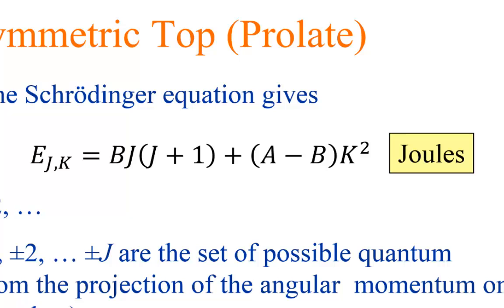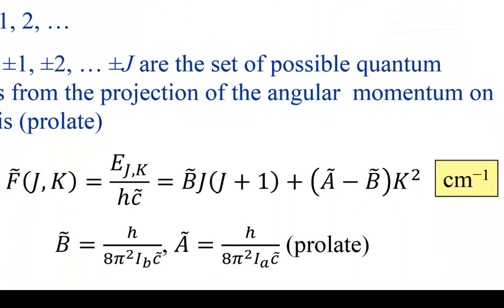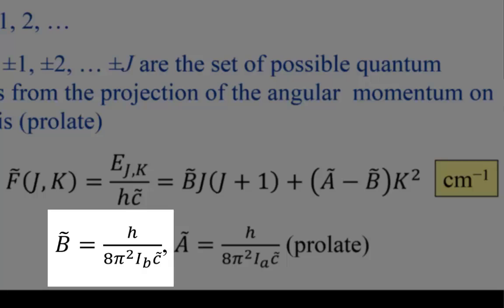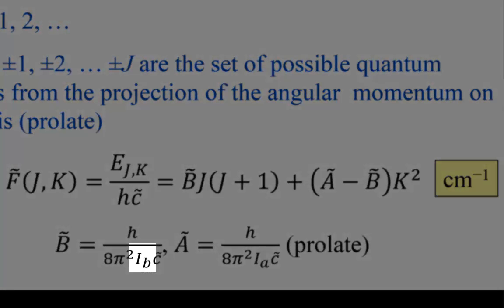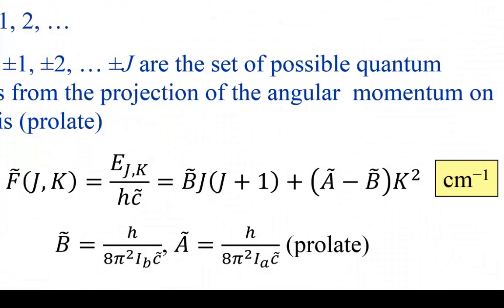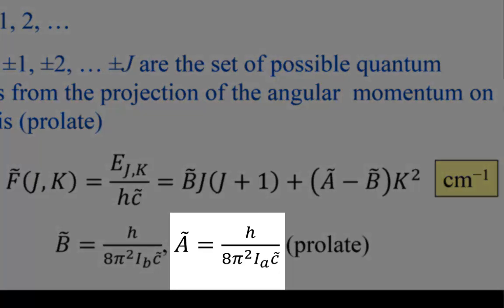This is the expression in terms of joules. We can convert this to wave numbers by dividing the expression by hc̃, where c̃ is the speed of light in centimetres per second. The tilde signifies that we are using centimetres rather than metres. The B rotational constant is as before, associated with the moment of inertia around the B axis. The A rotational constant has exactly the same form but is associated with the moment of inertia around the A axis.